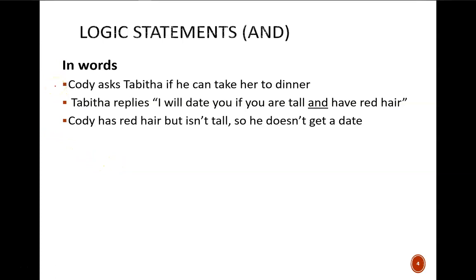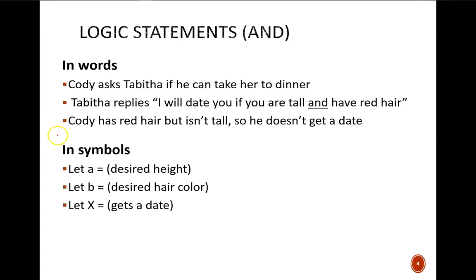Cody asks Tabitha for a date. Tabitha replies, I will date you if you are tall and have red hair. The reality is that Cody has red hair, but is not tall. One of Tabitha's conditions was met, but not the other. As a result, Cody does not get a date. We can represent this in an equation. First, we must condense the various conditions into symbols.